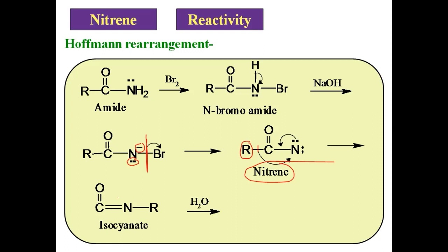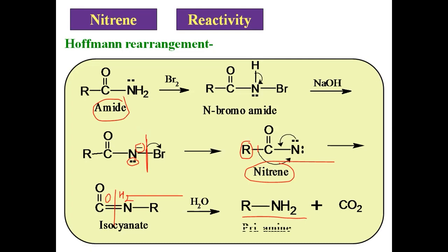Now this isocyanate reacts with a water molecule. This bond undergoes breaking — oxygen from the water adds to one side, and two hydrogen atoms add to the nitrogen side. Thus there is formation of carbon dioxide and R–NH₂. R–NH₂ is nothing but the primary amine, and thus this amide converts into a primary amine.